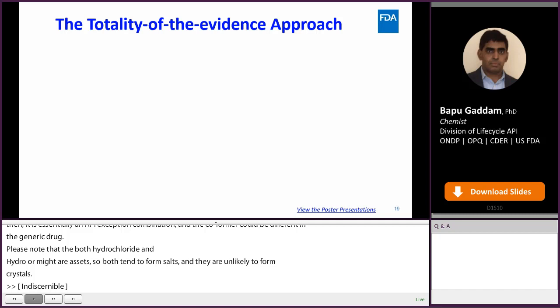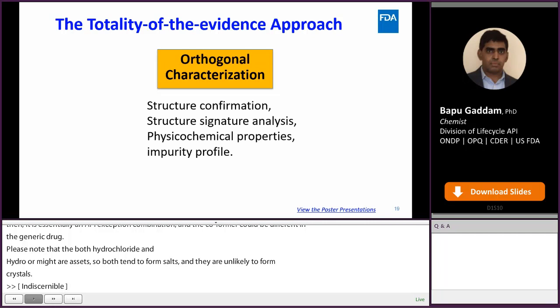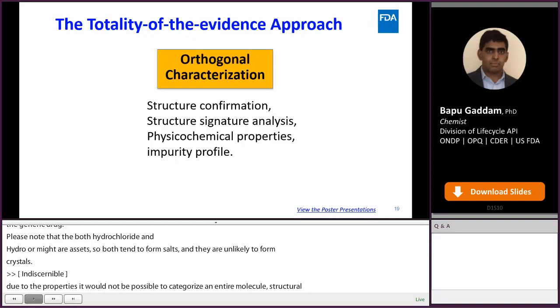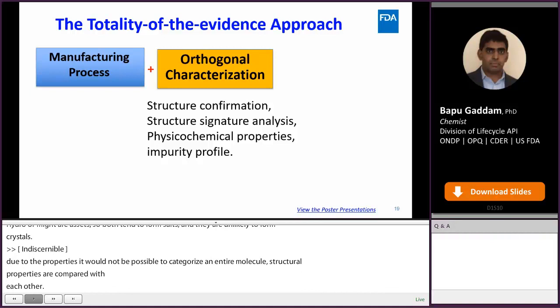Due to the properties of complex APIs, it may not be possible to characterize the entire molecule with any single analytical method. Each structural fragment is analyzed with different techniques and compared with the structural fragment of the RLD. So orthogonal characterizations are required to fully characterize the complex API. In addition, enhanced manufacturing process development is also used to identify critical quality attributes of the API and establish functional relationships of raw material attributes and process parameters to critical quality attributes.